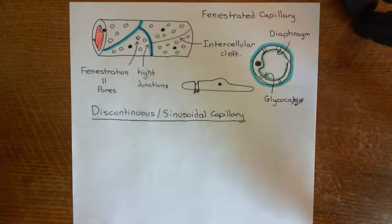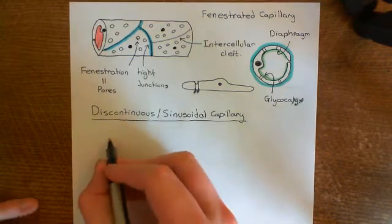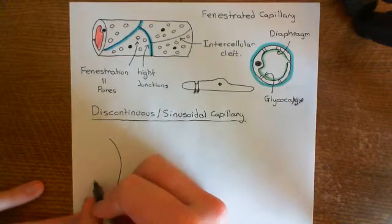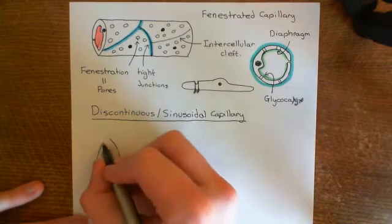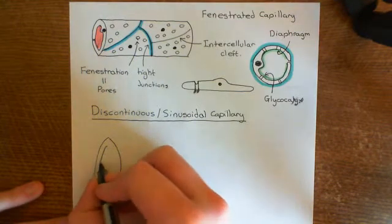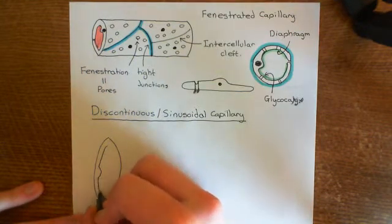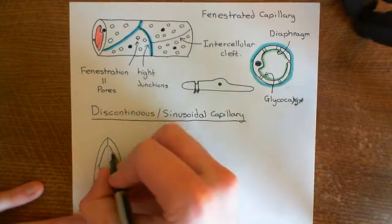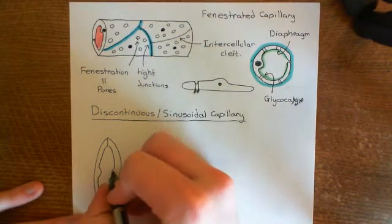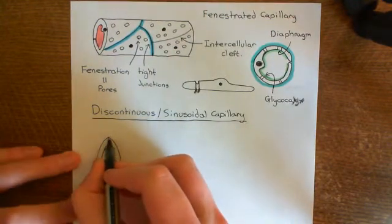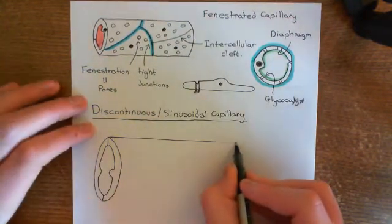These are generally bigger than fenestrated capillaries and continuous capillaries, so let's draw a bigger tube. They can fit slightly more than one cell within them, and they might have two endothelial cells making up a single side.